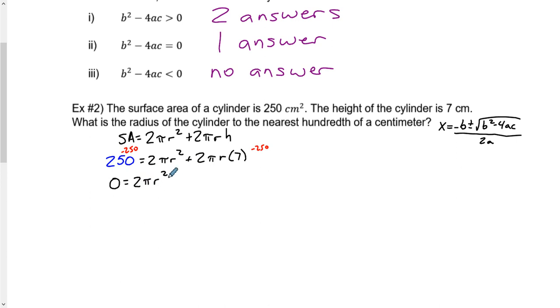At the same time I'm going to make my life a little bit easier and simplify a few things. 2 times π times the radius squared, plus if we take this 7 and multiply it by 2π, it would be 14π. Subtract 250. Now we have our equation in standard form.